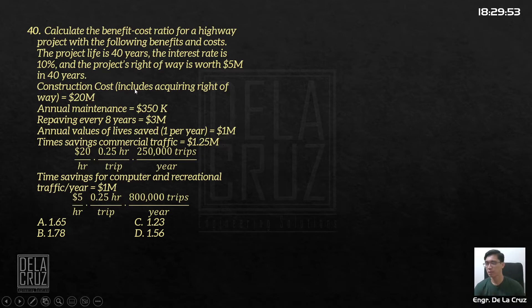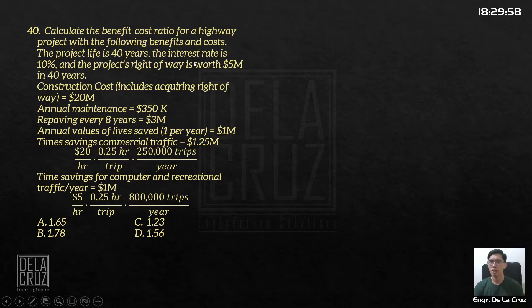Engineering economy problems. Calculate the benefit-cost ratio for a highway project with the following benefits and costs. The project's life is 40 years, interest is 10%.